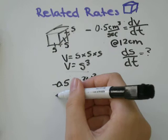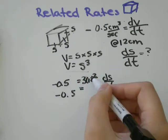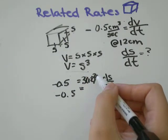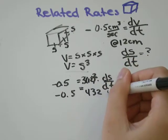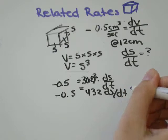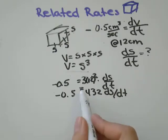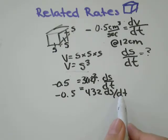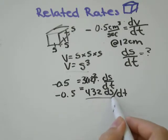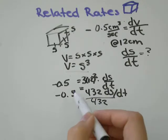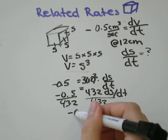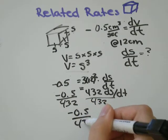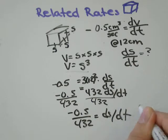So let's simplify that as far as we can. 12 squared is 144, and 144 times 3 equals 432. So we have negative 0.5 equals 432 times ds dt. If you divide both sides by 432, you will get negative 0.5 over 432 equals ds over dt.